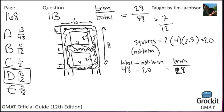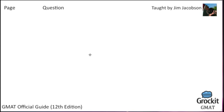Drawings like this are useful for problems that don't require careful angles or strict scale — they don't take long and help you account for everything. On to number 114, page 168. The answer choices involve various combinations of A, A squared, and A cubed.